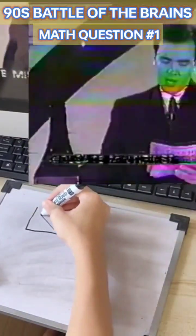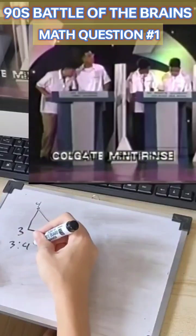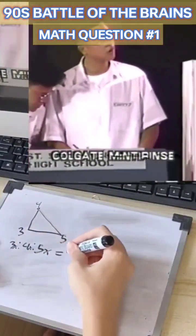The three sides of a triangular lot are in the ratio of 3 to 4 to 5. If its perimeter is 120 meters, what is its area in square meters?